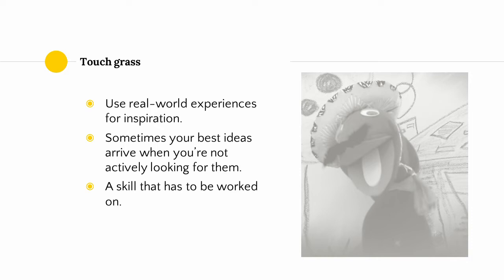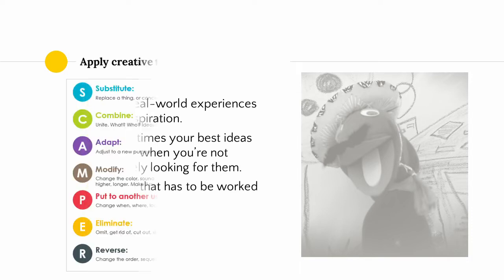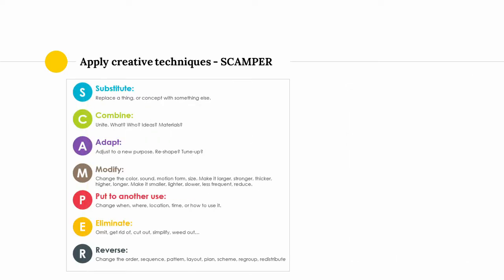You might think your life is boring and every day is exactly the same. Looking for inspiration from the real world can sometimes be difficult, but there are techniques to help. Another good way of finding new ideas is applying creative techniques regularly used by writers and songwriters. One example is the SCAMPER technique — standing for Substitute, Combine, Adapt, Modify, Put to another use, Eliminate, or Reverse — which shows a bunch of ways we can manipulate an existing idea to try to create something new out of it.